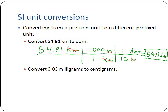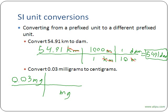Convert 0.03 milligrams to centigrams. We start by putting 0.03 milligrams. We want to convert away from milligrams first, so we put milligrams on the bottom to cancel it. We then go to the base unit, grams. One milligram gets the one because it has the prefix. Milli is one thousandth or 10 to the negative third. We can use either one — so we'll say 10 to the negative third, because that's what equals milli.